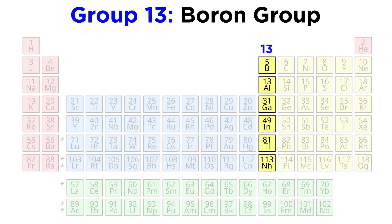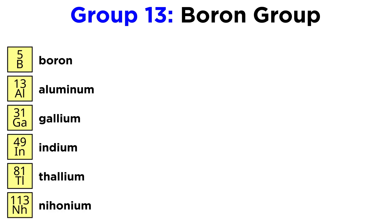Under the numbering convention we are utilizing in this series, this is group thirteen, which we can refer to as the boron group. It includes boron, aluminum, gallium, indium, thallium, and nihonium.